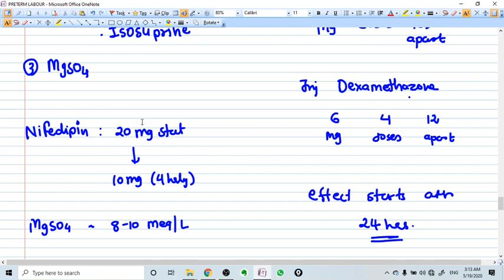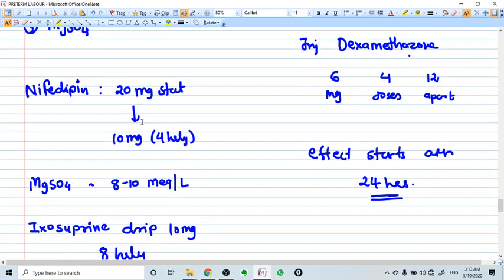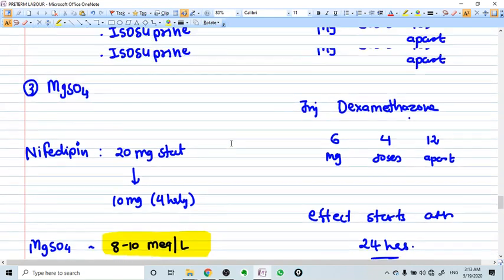How is nifedipine taken? 20 mg stat followed by 10 mg 4 hourly. Magnesium sulfate should be given in higher doses if we want to use it as a tocolytic drug, and the concentration in the blood is around 8 to 10 mEq per liter. It's only if we use in higher doses that the tocolytic effect of magnesium sulfate will be there.